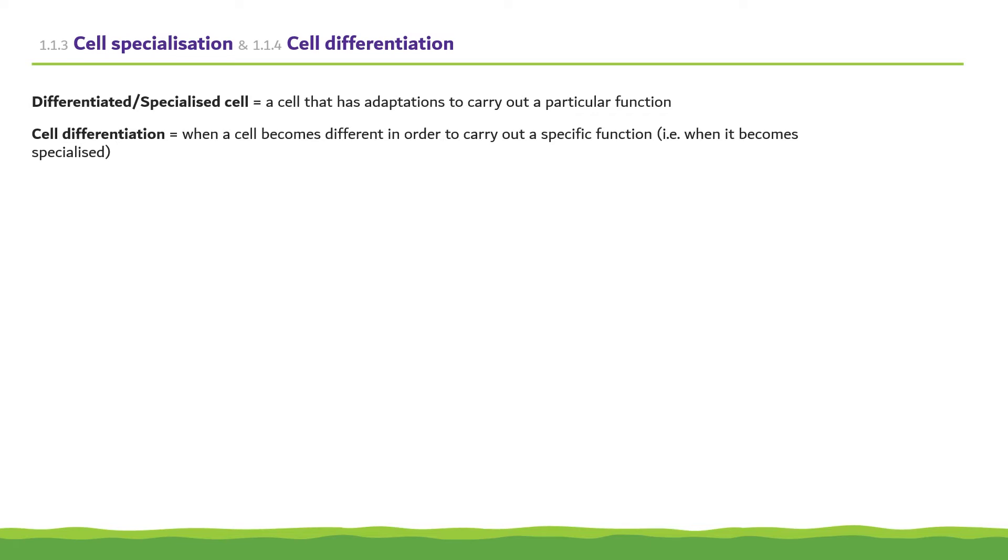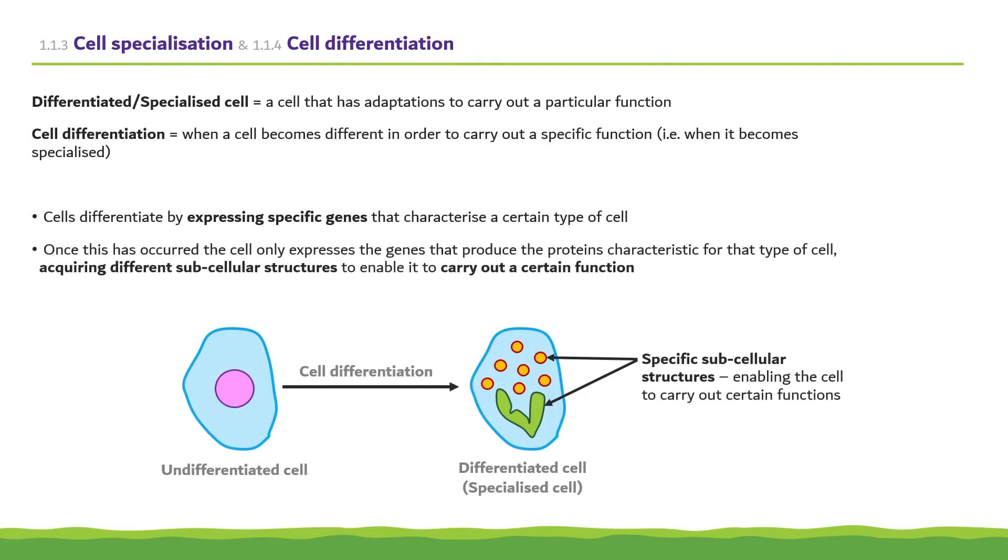Cells carry out this process of differentiation by expressing specific genes that characterize a certain type of cell. Once this has occurred, the cells only express the genes that produce the proteins characteristic of that cell type, acquiring different subcellular structures to enable it to carry out a certain function. This is demonstrated in the diagram below, where an undifferentiated cell has become differentiated or specialized, gaining specific subcellular structures, enabling it to carry out the cell's functions.